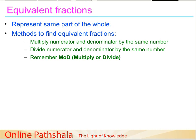To summarize: equivalent fractions represent the same part of the whole. The two methods to find them are — first, multiply the numerator and denominator by the same number (used when there is no common factor except one), and second, divide the numerator and denominator by a common factor. You can remember this as MOD — Multiply Or Divide.